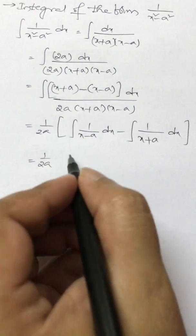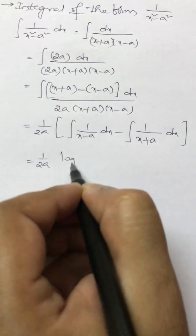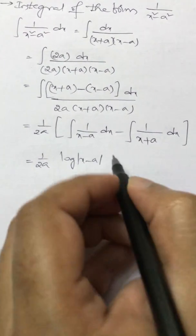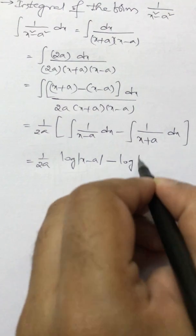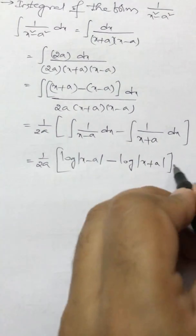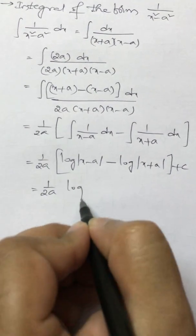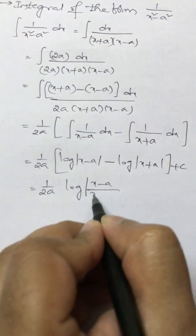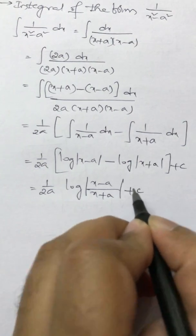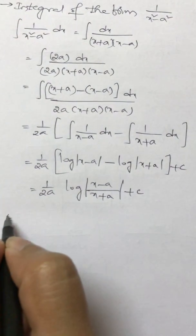So this is integral of 1 by x is log mod x. So log mod x minus a minus log mod x plus a plus c. So that is 1 by 2a into log mod x minus a by x plus a plus c.